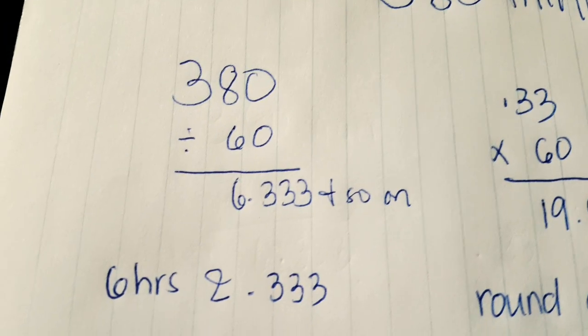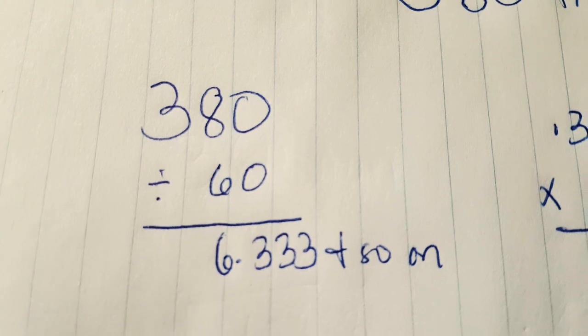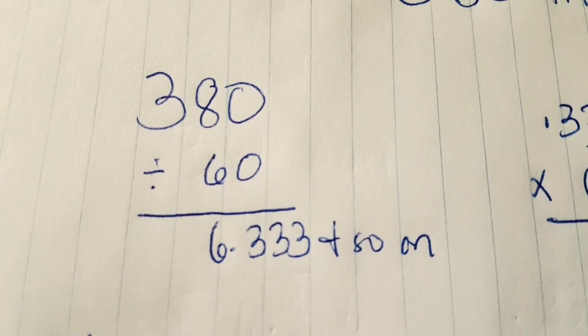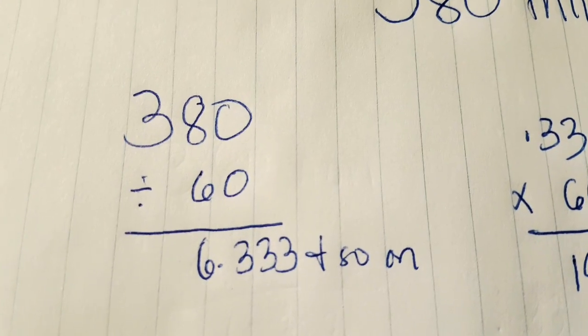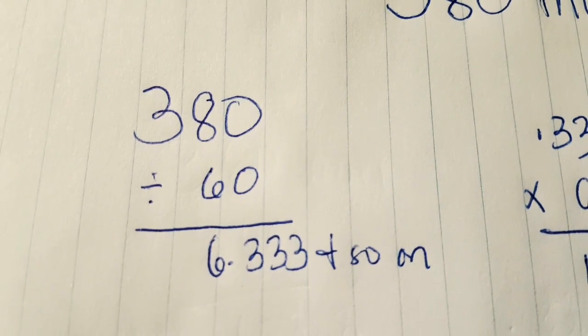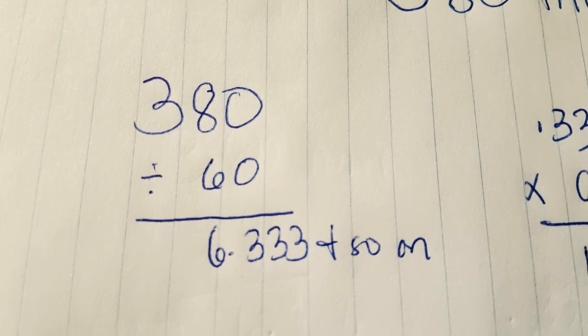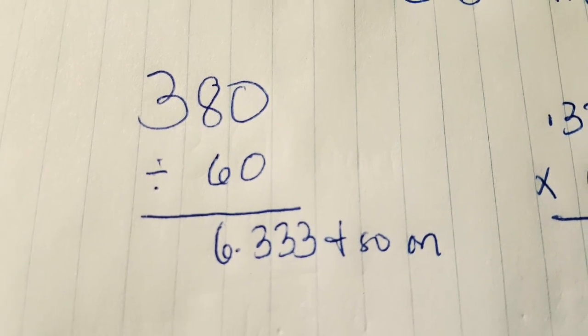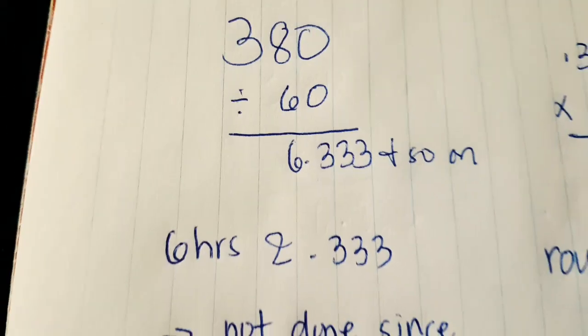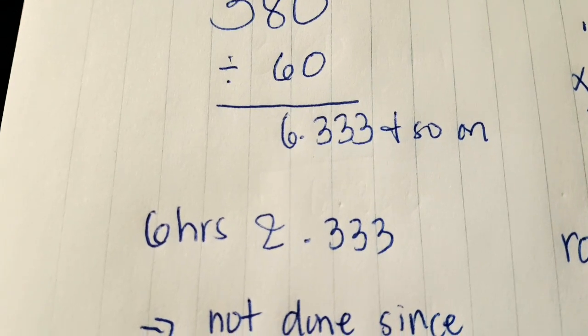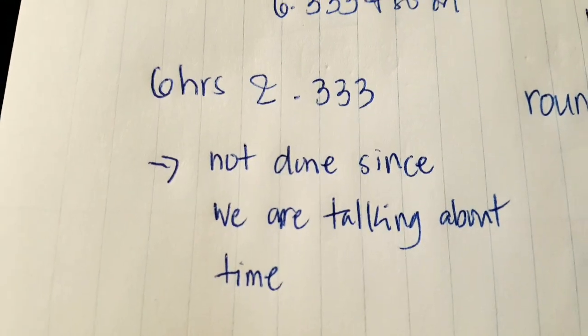We divide 380 by 60 because we're talking about one hour equivalent to 60 minutes. So the result is 6.333 and so on. So 6 hours and 0.333. We're not done yet because we're talking about time.